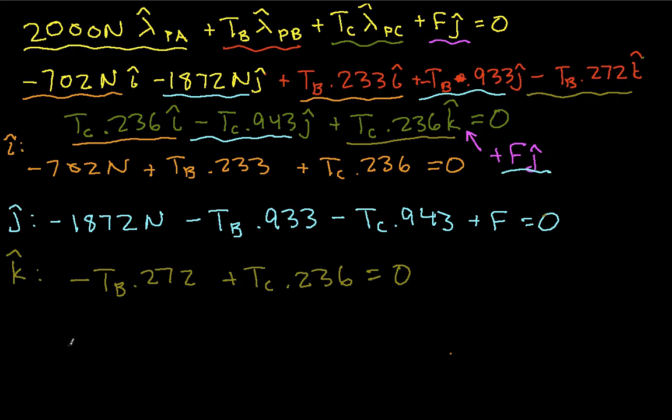So we have then that TB is equal to 1390 newtons, TC is equal to 1602 newtons, and F is equal to 4680 newtons.